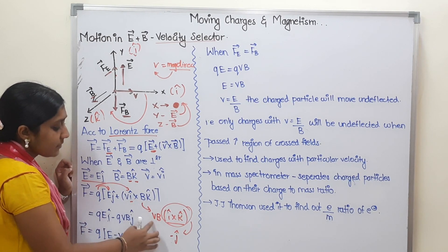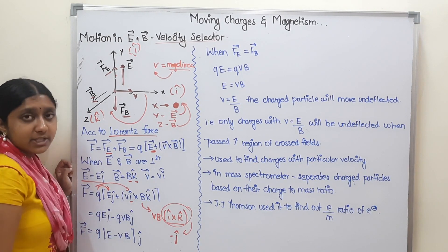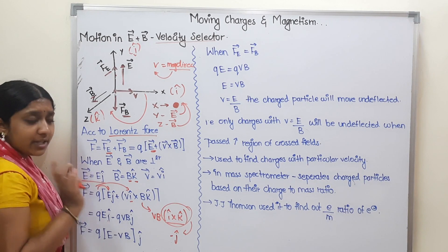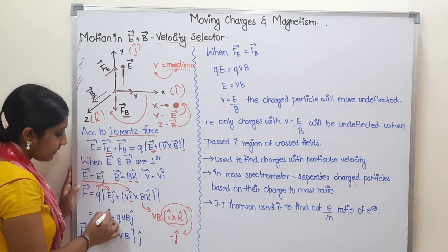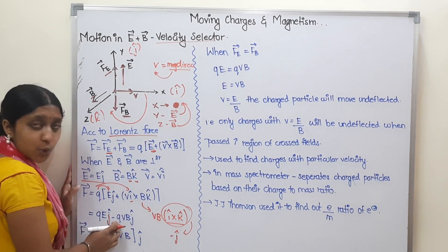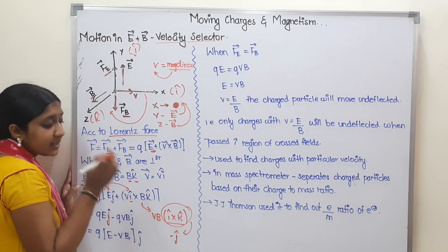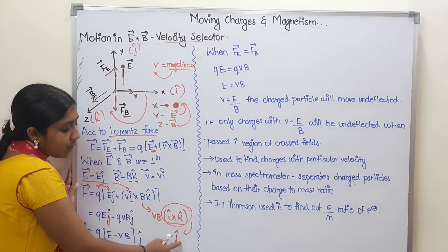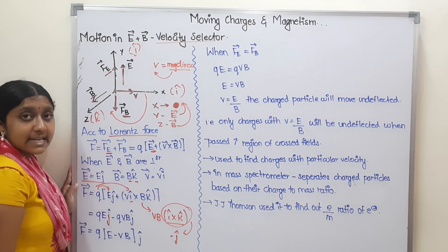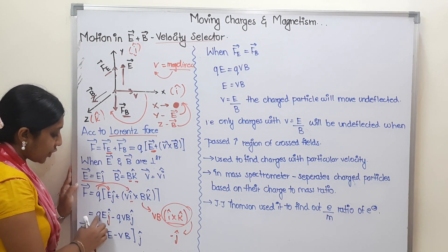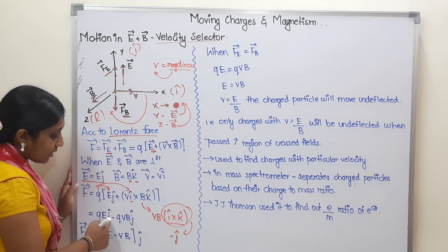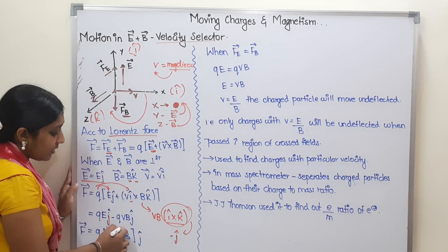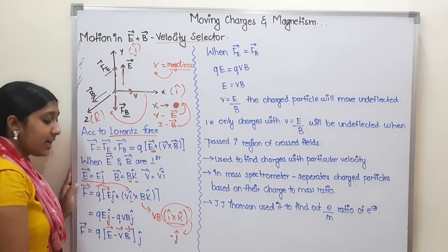So this gives us Q times V times B. How did we do this step? You multiply by Q. This is very clear. If we multiply Q, V, B — the magnitude and scalar — and I cross K gives minus J. So taking J common: Q times (E minus VB) in the J direction.